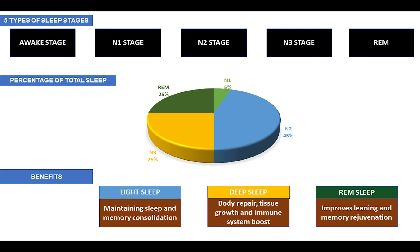The second stage is N1, which is the lightest form of sleep and accounts for five percent of total sleep. In this stage, breathing is regular and muscle tone occurs in the skeletal muscles. EEG recordings show N1 is characterized by low-voltage theta waves, beginning when more than half of the alpha waves are replaced by low-amplitude mixed-frequency activity.